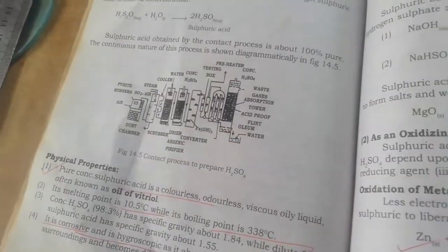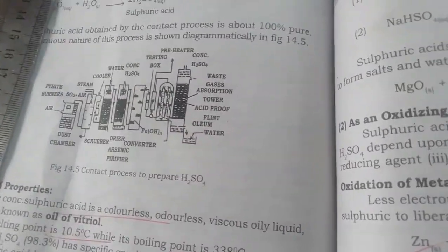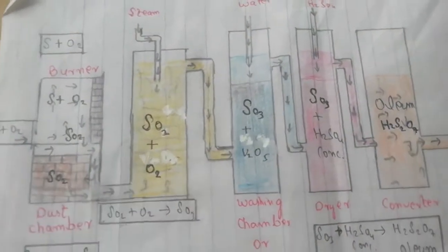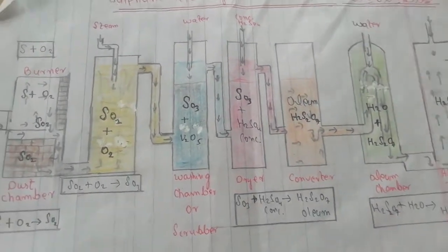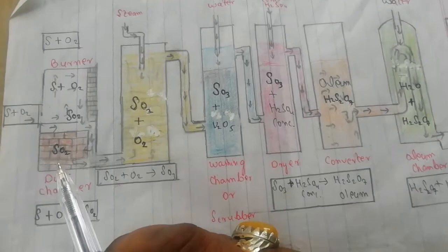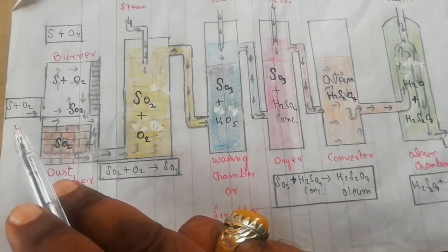So students, first of all I will explain to you, then I will tell you some answers. Look at here in this diagram. Students, you can see this diagram here. We created this diagram on contact process. This is the first thing. Students, sulfur burns in the air.